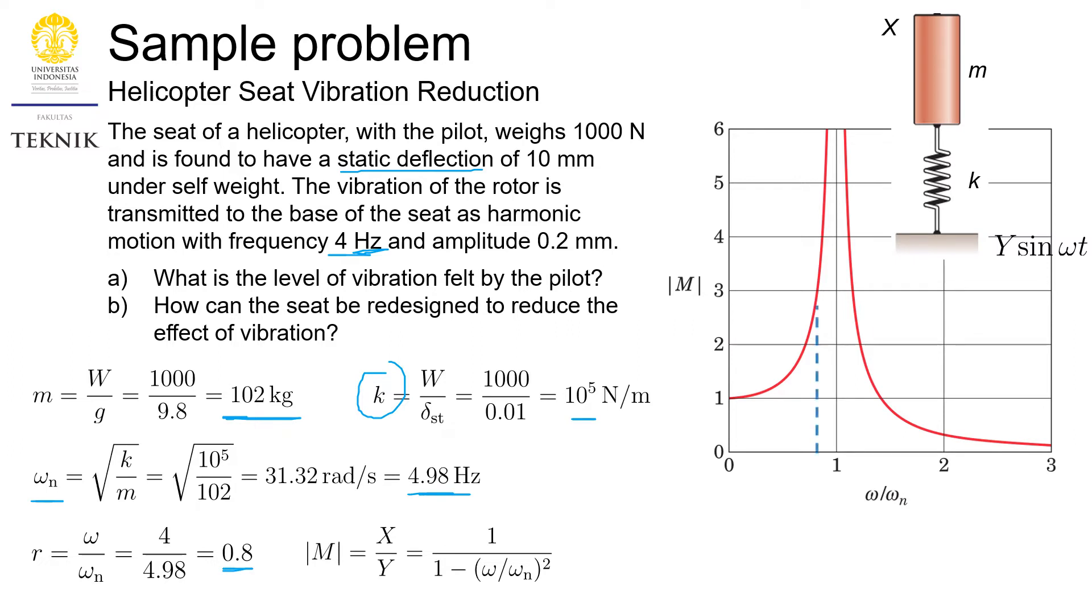From which we can get the ratio. The ratio is 0.8. Notice that 0.8 is located somewhere here, so it is very close to resonance. That's why the magnification factor is very large, and this is very close to 3. Now, of course, from this expression, because the value of Y is known, we can determine the value of X, which is the amplitude of the output or the output motion, and it is 0.56 millimeters. From the input of 0.2 millimeters, it is being magnified almost three times.